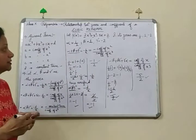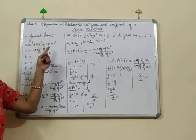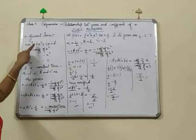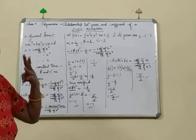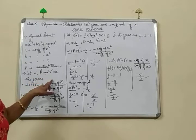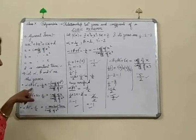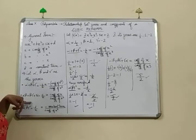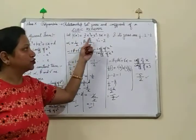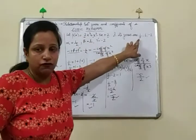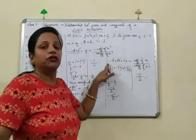Let us recap. The general form of a cubic polynomial is ax³ plus bx² plus cx plus d, where a is the coefficient of x cube, b of x square, c of x, and d is the constant term. Since it is a cubic polynomial, it will always have 3 zeros — alpha, beta, and gamma. We verified the relationship between zeros and coefficients through sum of zeros, product of zeros, and sum of product of any two of its zeros.